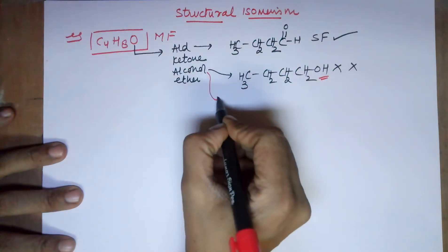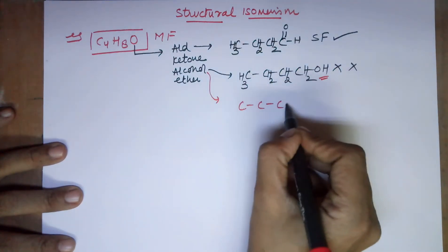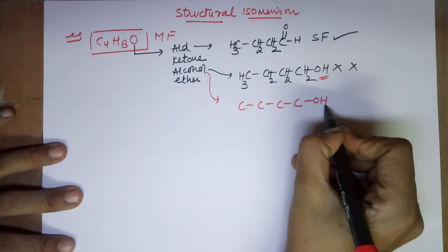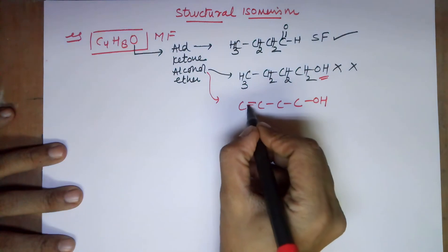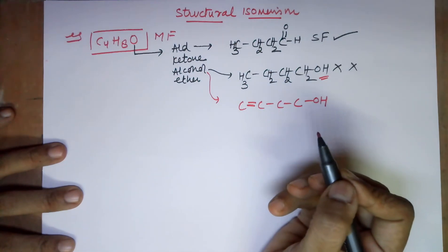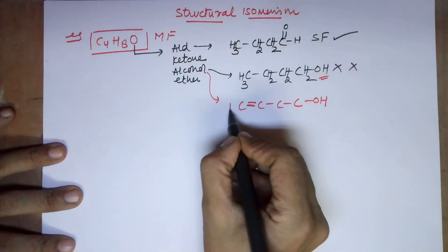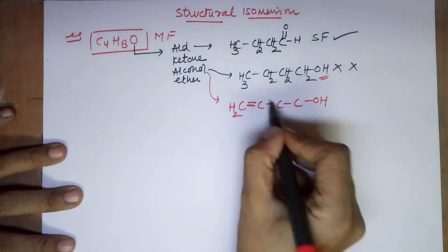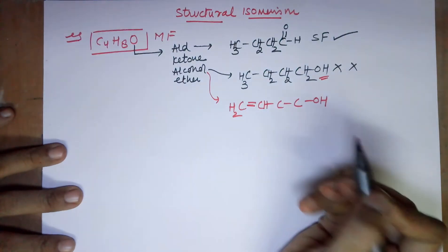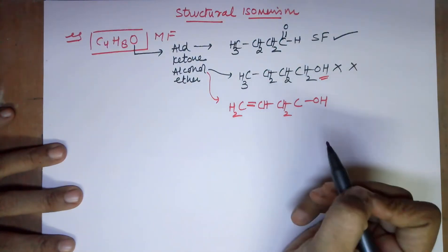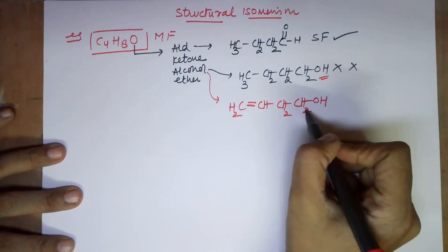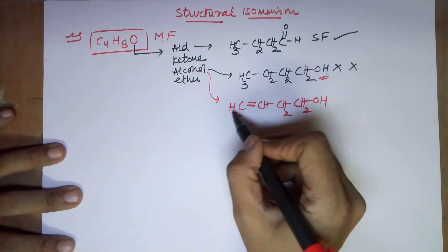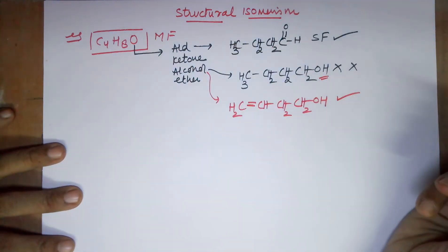So what I could do is 1, 2, 3, 4 and that's my OH and I put a double bond at any one of the positions. Let me put it here. If there's a double bond here, now let's satisfy the hydrogens. 2 bonds, 2 hydrogens. 3 bonds, only 1 hydrogen needed. 2 bonds, 2 hydrogens. 2 bonds, 2 hydrogens. Let's count the hydrogens now. 1, 2, 3, 4, 5, 6, 7 and 8. Now this looks fine.